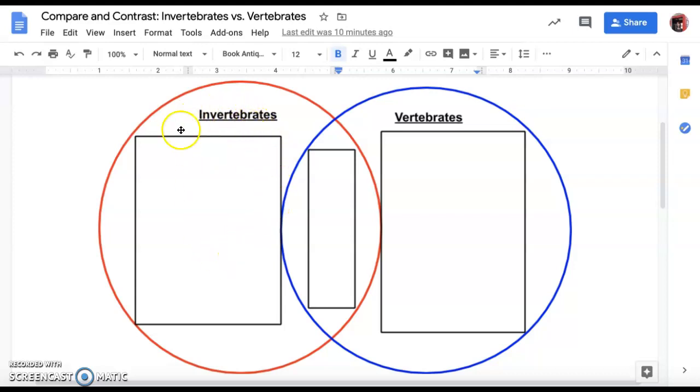Your invertebrates are here and they are the red circle, your vertebrates are here and they are the blue circle, and then you have your shared area where there are common characteristics between both.